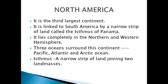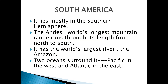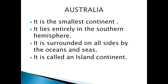North America is the third largest continent and is linked to South America by a narrow strip of land called the Isthmus of Panama. It lies completely in the northern and western hemisphere, and three oceans surround it: Pacific, Atlantic, and Arctic. An isthmus is a narrow strip of land which joins two large land masses. South America lies mostly in the southern hemisphere. The Andes, the world's longest mountain range, runs through it from north to south. It has the world's largest river, the Amazon, and is surrounded by the Pacific Ocean to the west and the Atlantic Ocean to the east.